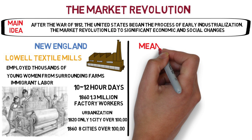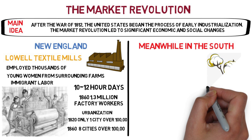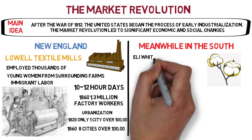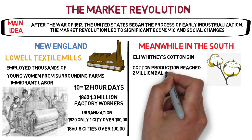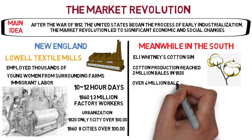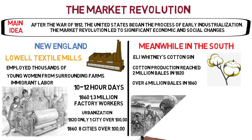Most of this urban and industrial growth took place in the North. Meanwhile, the South remained largely agricultural and rural. Starting in 1810, cotton became the dominant cash crop in the South, thanks mostly to the invention of the cotton gin by Eli Whitney. In 1791, the South produced 6,000 bales of cotton. By the 1840s, Southerners were producing more than two million bales each year, and by 1860, annual production had reached over four million bales.